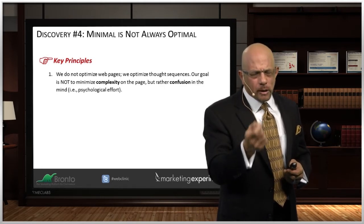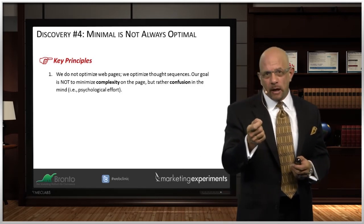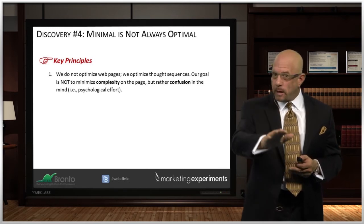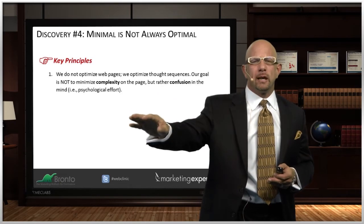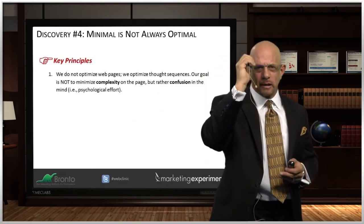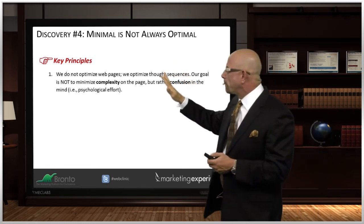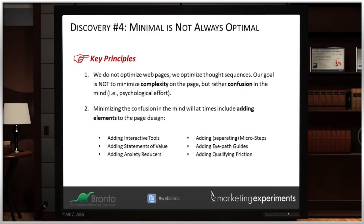When you reduce complexity, you don't necessarily reduce confusion — you can actually increase it. In many cases our pages have too much information, and it helps to reduce that information to get greater clarity. But again, the goal is not to minimize complexity, but rather confusion. And minimizing the confusion in the mind will at times include adding elements to a page.